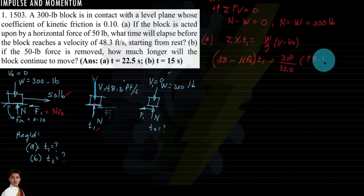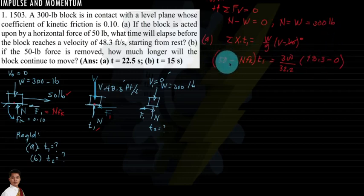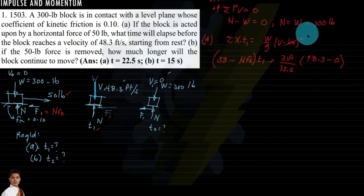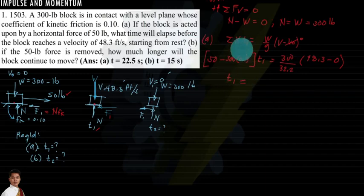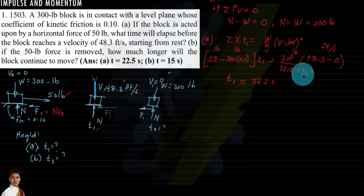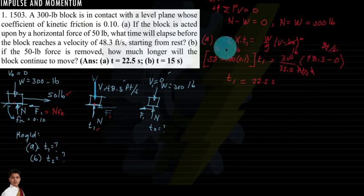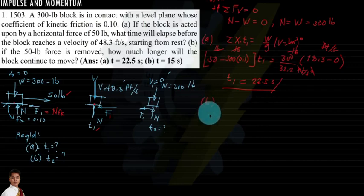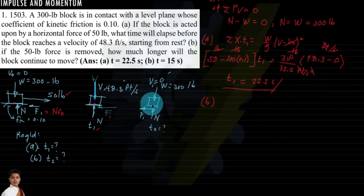Substituting values: 50 minus (300 times 0.1) times t1 equals (300/32.2) times (48.3 minus 0). Solving for t1 gives 22.5 seconds. Unit analysis: pounds cancel, feet per second divided by feet per second squared leaves seconds as the remaining unit.